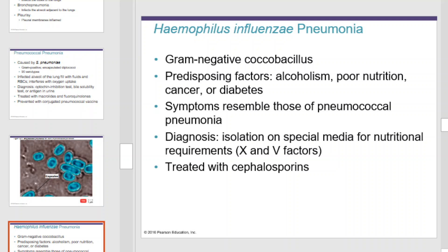Haemophilus influenzae pneumonia is caused by a gram-negative coccobacillus. Those contracting it usually have predisposing factors such as alcoholism, poor nutrition, cancer, or diabetes. Symptoms resemble those of pneumococcal pneumonia. Diagnosis is done by isolation on special media requiring X and V factors. Treatment with cephalosporins is common.